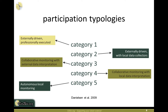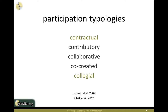In citizen science, there have been many different typologies. In 2009, Finn Danielson published a paper on what he called category one through five of community-based monitoring. Category one was externally driven and professionally executed — the traditional academic scientific model. Category two was externally driven but the community helped with local data collection. Category three involved collaborative monitoring with external data interpretation. Category four had collaborative monitoring with local data interpretation, and category five was co-created autonomous local monitoring.